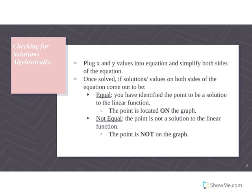Now for checking solutions algebraically — step one: plug the x and y values into the equation and simplify both sides. We're not solving for each side; we're doing the math on the left side and seeing if it equals the math on the right side. If the values on both sides come out equal, you have identified the point as a solution to the linear equation.